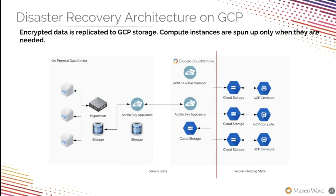In addition to the resiliency provided by Actifio, your DR infrastructure in GCP benefits from the platform's native features — HA for resilient disks and CPUs, native load balancing, snapshots, and more. Running machines in this DR state also provides a nice preview of what migrating and running your production infrastructure in GCP might look like. Ranga is going to wrap things up now by talking about how MavenWave can help you get your DR into GCP.